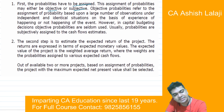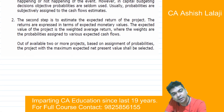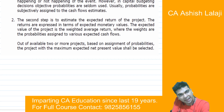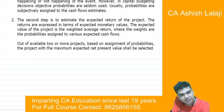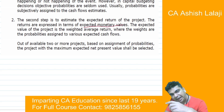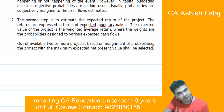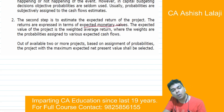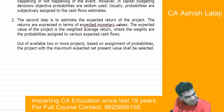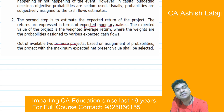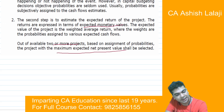The second step is to estimate the expected return of the project. Multiply the projections with corresponding probabilities and take the total — that gives you the expected monetary value. Discount these expected monetary values to work out the expected net present value. If there are two or more projects, select the project with the maximum expected net present value.